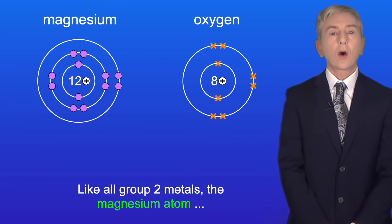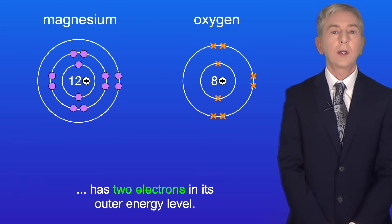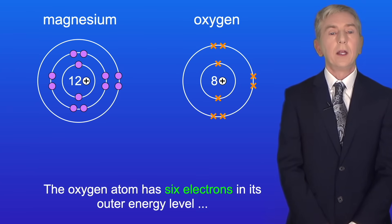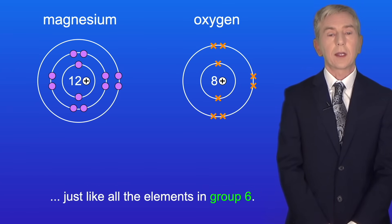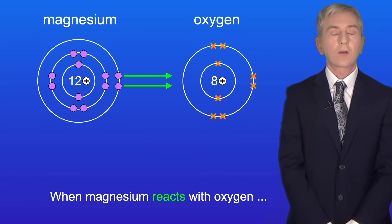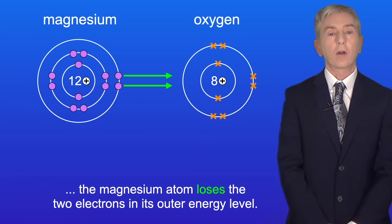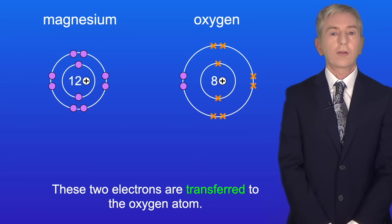Like all group 2 metals, the magnesium atom has 2 electrons in its outer energy level. The oxygen atom has 6 electrons in its outer energy level, just like all the elements in group 6. When magnesium reacts with oxygen, the magnesium atom loses the 2 electrons in its outer energy level and these 2 electrons are transferred to the oxygen atom.